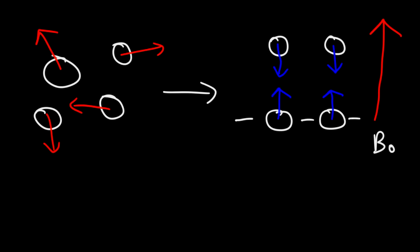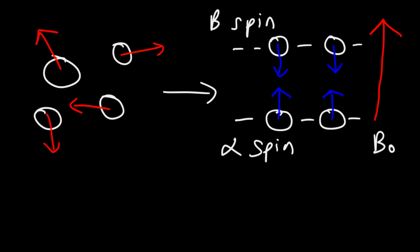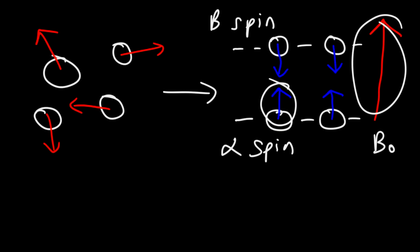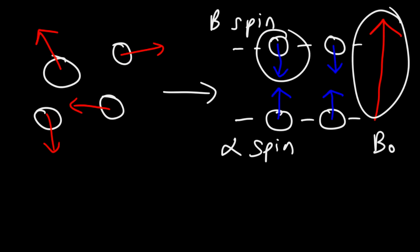Whenever the nuclei are aligned with the applied magnetic field, this is known as the alpha spin state. Whenever they're aligned against the external magnetic field, this is known as the beta spin state. The alpha spin state is lower in energy than the beta spin state, so the majority of the protons will be in the alpha spin state because it's more stable. Using the analogy of a river, it's easier to swim in the direction of the current rather than against it. So it takes more energy to go against the applied magnetic field, putting you in a higher energy state.